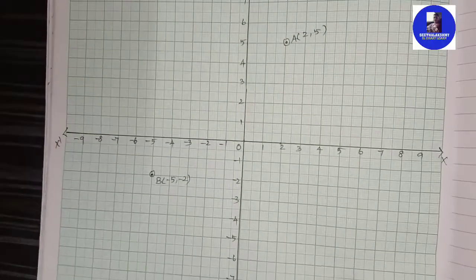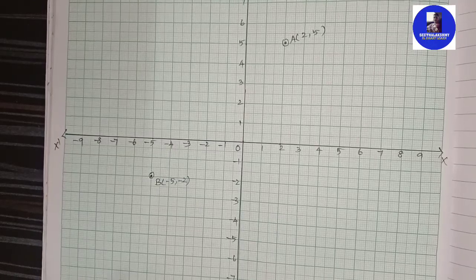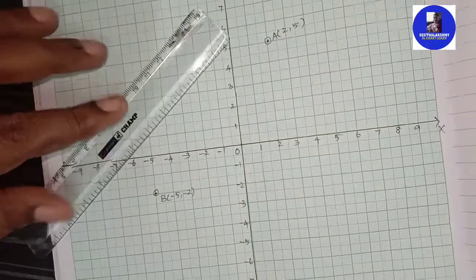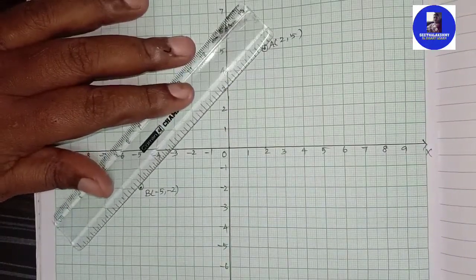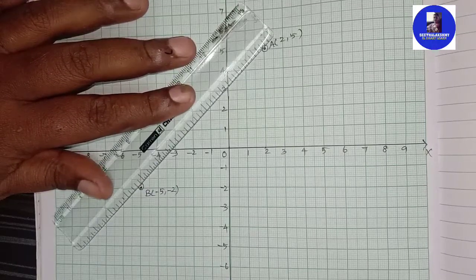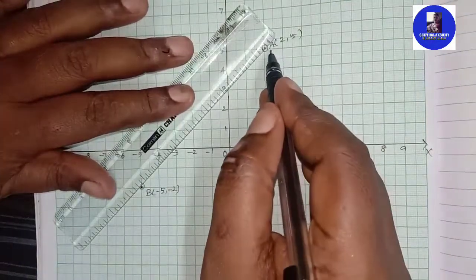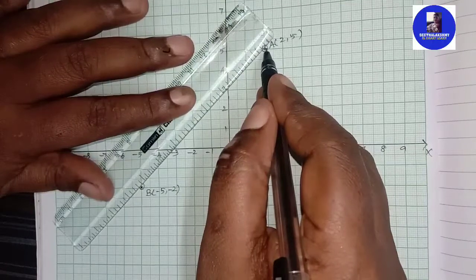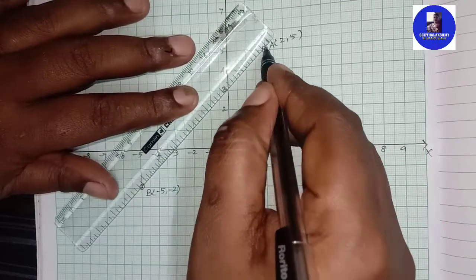Next, these are 2 lines. First, join A and B. Plot the points and draw the 2 lines — join and scale.